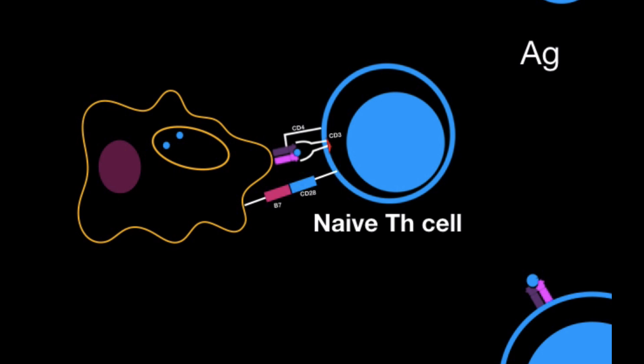Then, after it binds to B7 through CD28, it will start expressing interleukin-4 receptors, which is also very important in differentiating a naive T helper cell to T helper cell 2. And the interleukin-4 is usually secreted out by other T helper cells 2 or mast cells or basophils. Or, it can also actually sometimes be secreted out by the naive T helper cell itself, which can bind to its own interleukin-4 receptors. It's called an autocrine function.